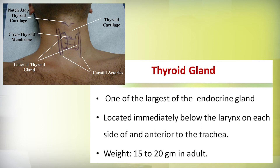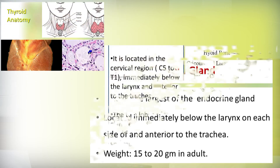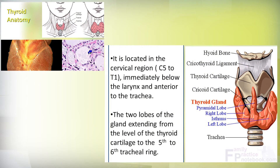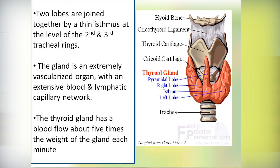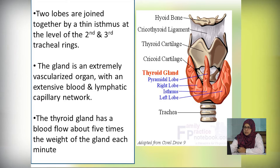First, I am going to discuss the thyroid anatomy and location. Thyroid gland is one of the largest endocrine glands, located immediately below the larynx on either side of the trachea. Its weight is about 15 to 20 grams in adults. It is located in the cervical ring C5 to thoracic 1. Thyroid gland has two lobes, extending from the level of thyroid cartilage to the fifth to sixth tracheal ring, connected by an isthmus at the level of second to third tracheal ring. The gland is an extremely vascular organ with an extensive blood supply and lymphatic capillary network.